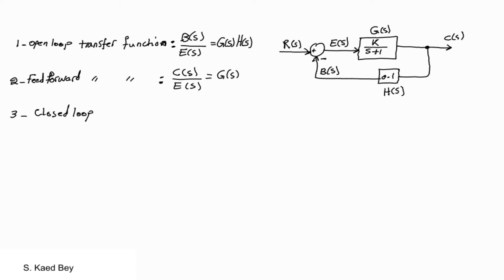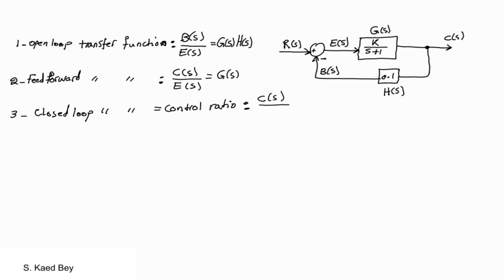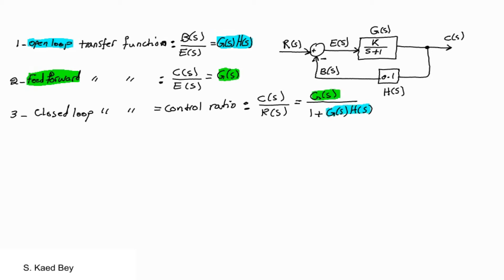The third definition is the closed-loop transfer function, or what we call sometimes the control ratio. It is equal to C over R, where R is your reference or input signal. This relation is equal to G over 1 plus GH. The plus sign in the denominator is dictated by whether B is being added or subtracted from the reference signal. The derivation of this closed-loop transfer function will be given in the next video.